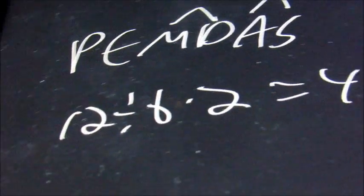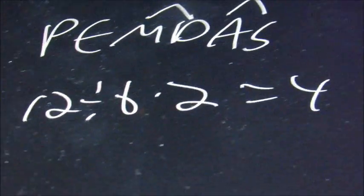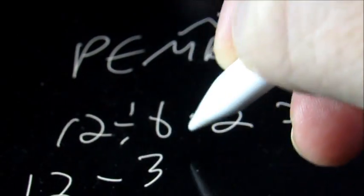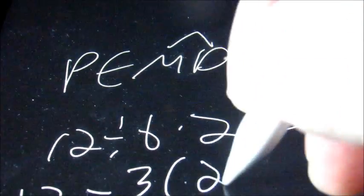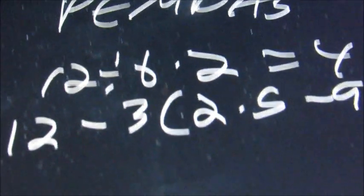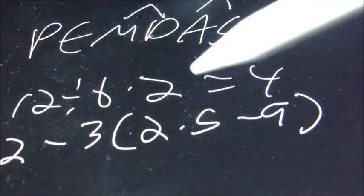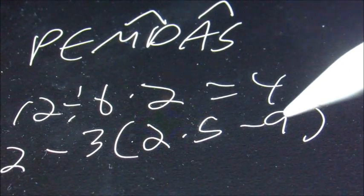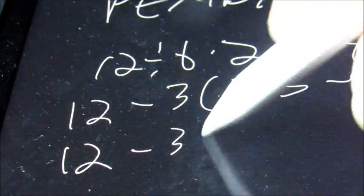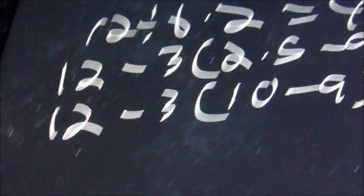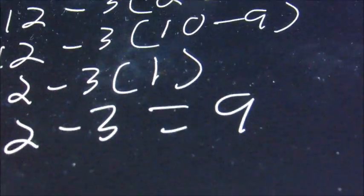People miss this one — they'll try to do the multiplication first and get 12 divided by 12 and get one, but that's the wrong answer. For a longer example: 12 minus three, then in parentheses two times five minus nine. We do the parentheses first; inside we do multiplication first, so two times five is ten, then ten minus nine is one. Now we have 12 minus three times one. Three times one is three, so 12 minus three equals nine.